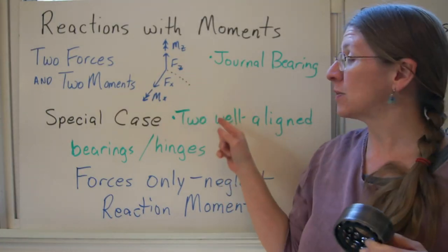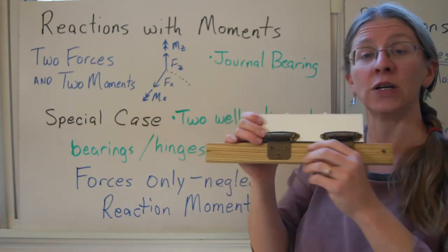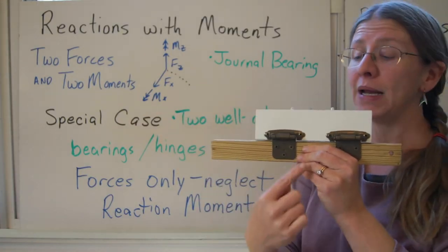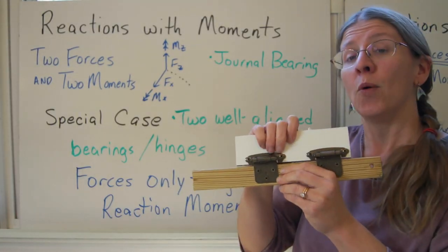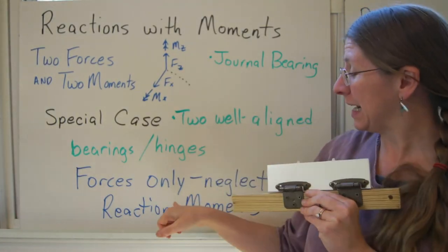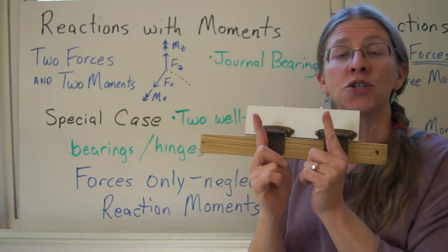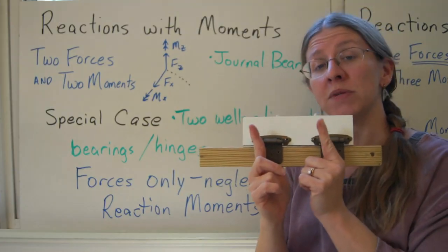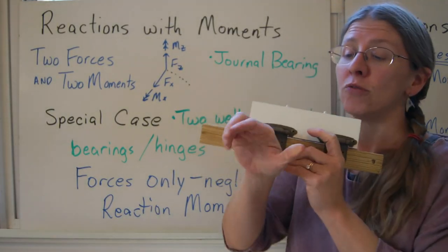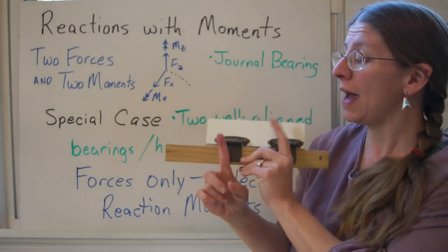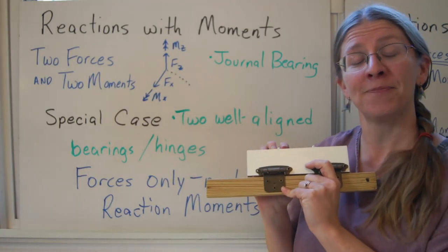This last special case is when you have two or more bearings or hinges together. There may or may not be forces along the axis, depending on whether or not you're talking about journal bearings or hinges. But what you want to do is neglect any reaction moments here. The trick is, when you have these two forces, they are able by themselves to resist both translation in this direction and rotation perpendicular to them. So once you have these two, you no longer need to consider the reaction moments.